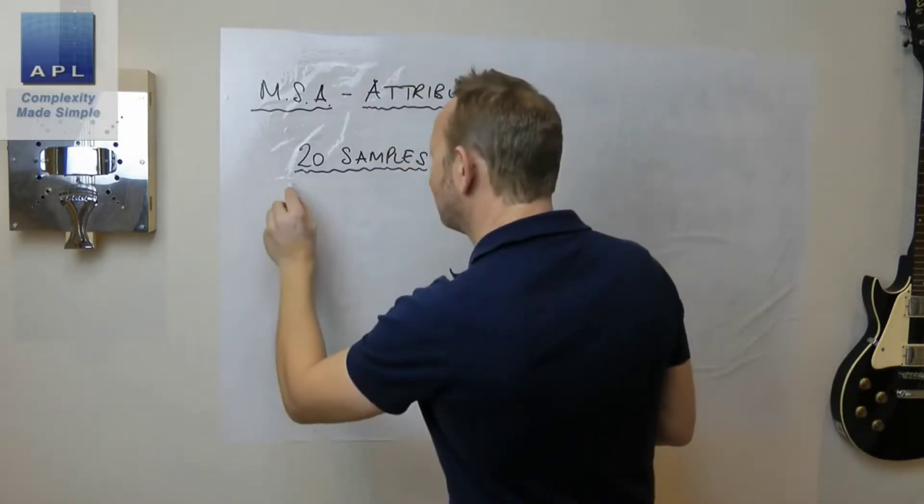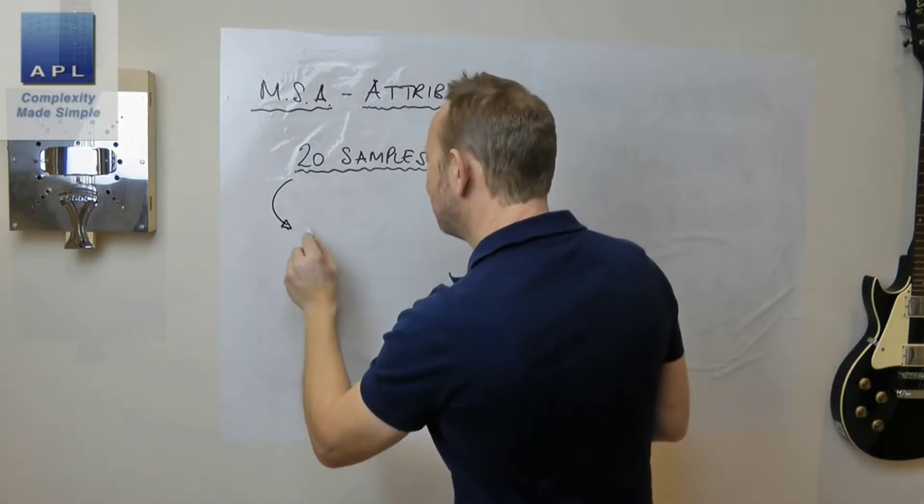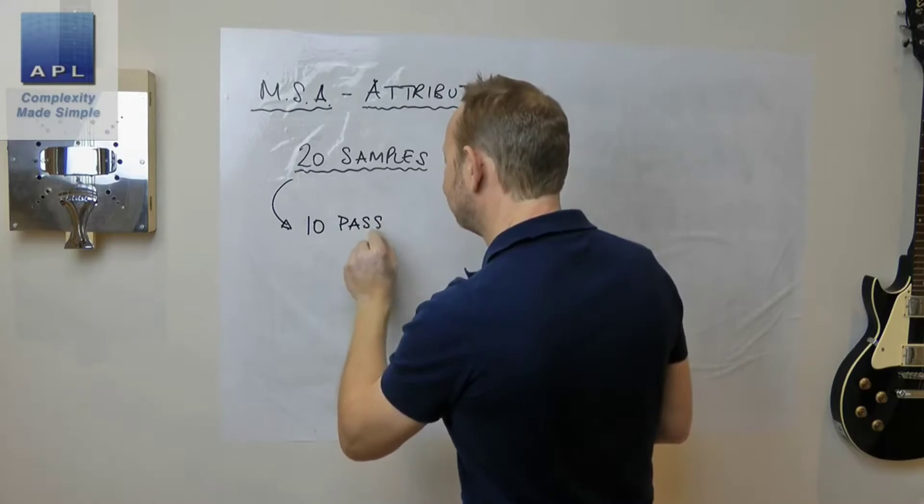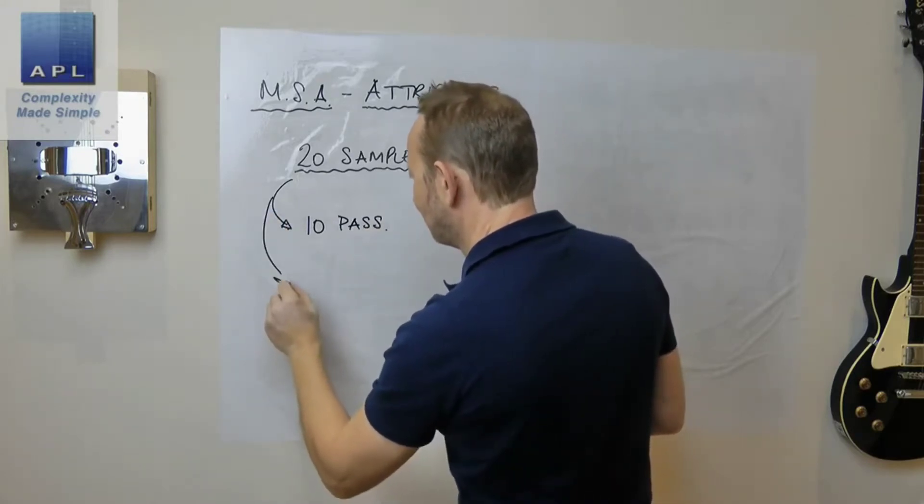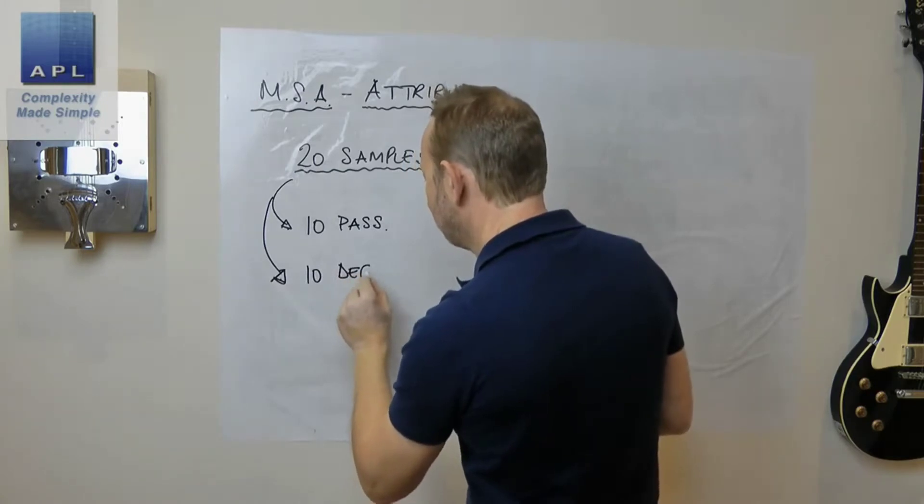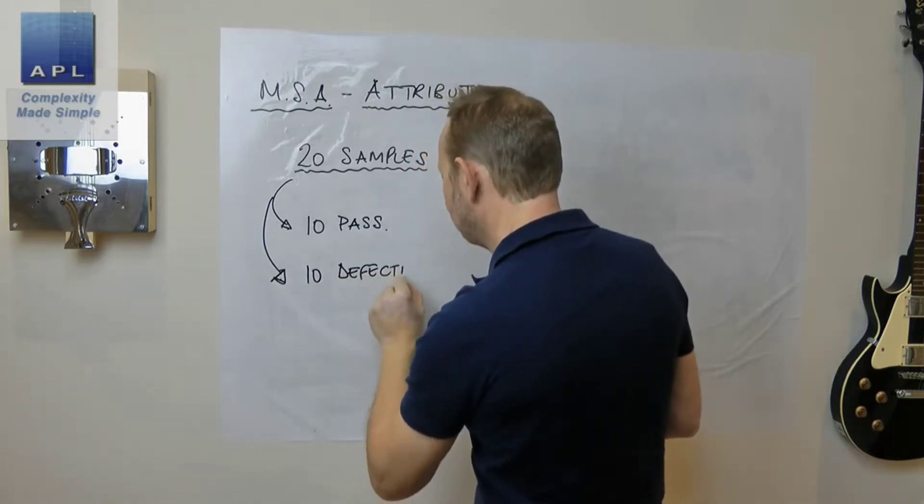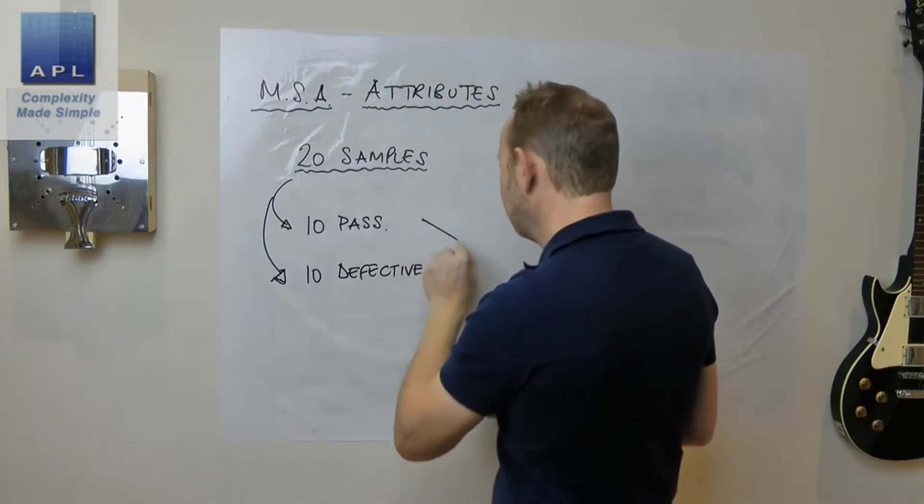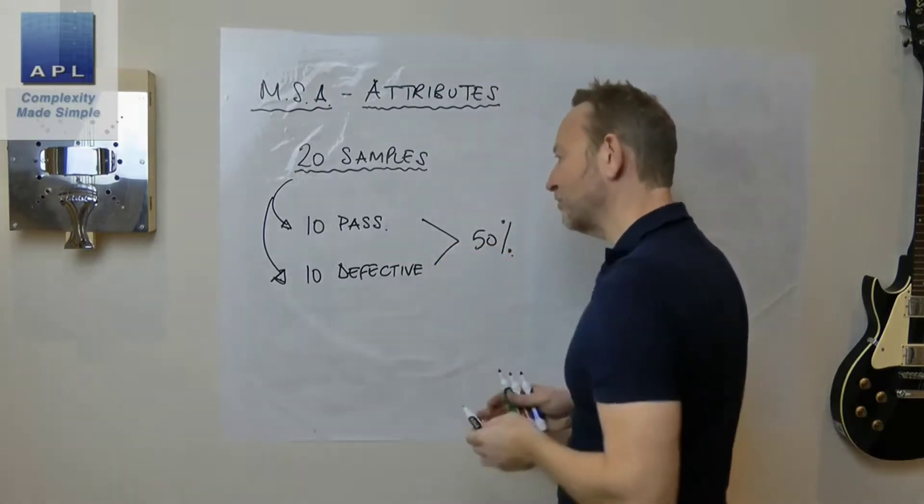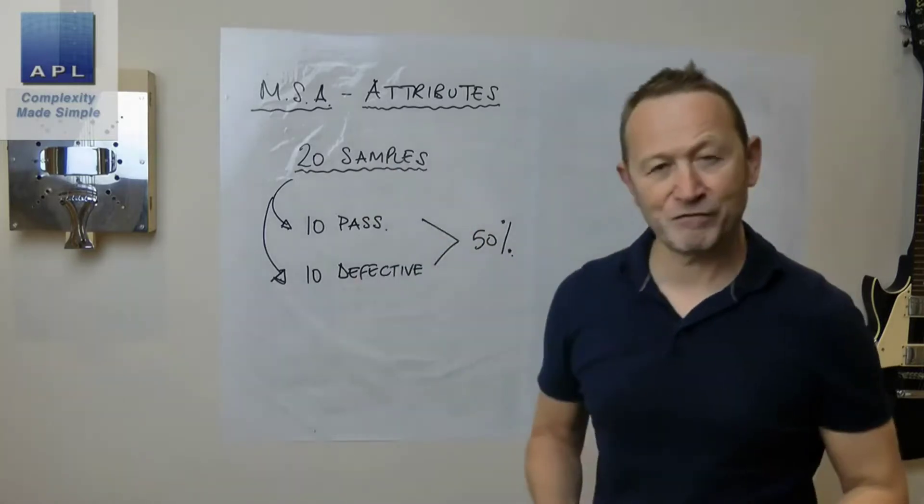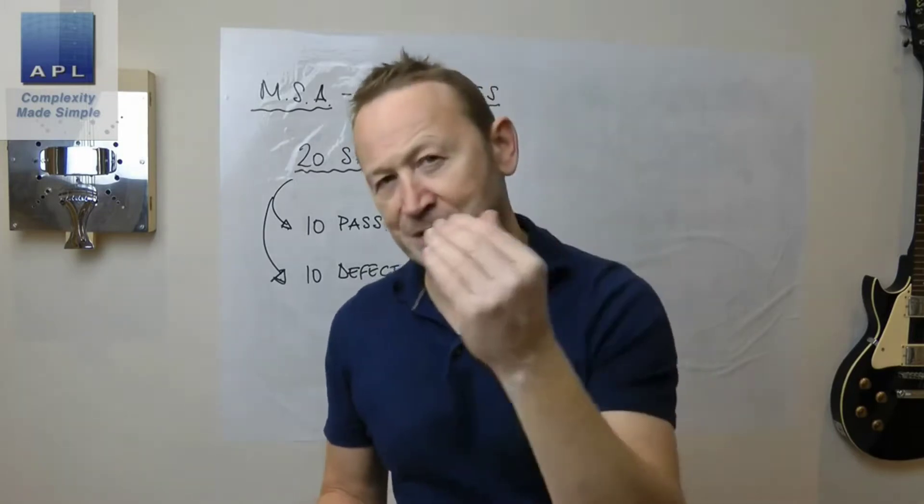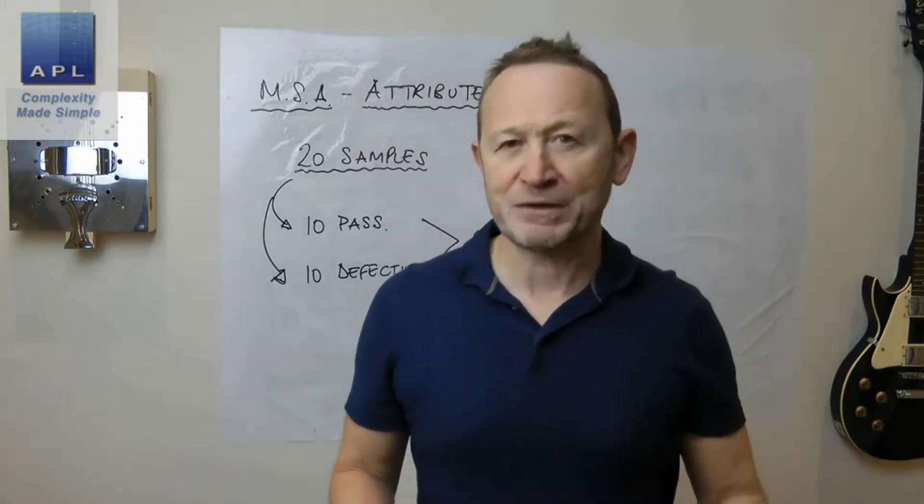For the 20 samples, they must be 10 that pass and 10 which are defective. However many samples you offer up to the measurement systems, and I usually like to offer up 20, it must be a 50-50 split.